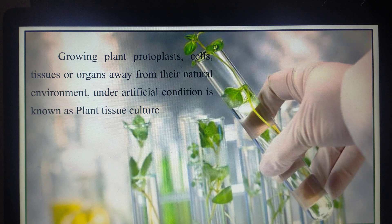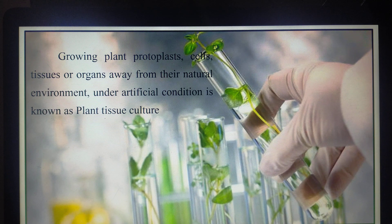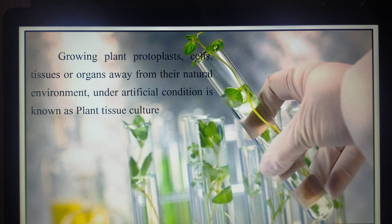Growing the protoplast, cells, tissues, or even organs — if you take a leaf, cut it into small pieces, and place that small piece in a nutrient medium, from that small leaf we can generate an entire plant. This is the astonishing behavior of the plant cell, unique only to plant cells, and that is what plant tissue culture deals with.